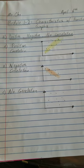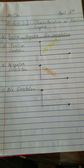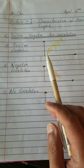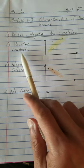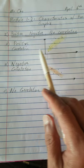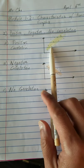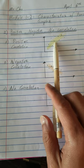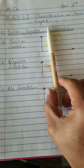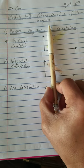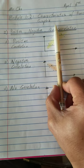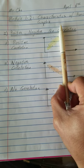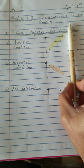We always read our graph from left to right. If you look at the first example here, A, positive correlation — from left to right, you notice that there's a trend on the graph moving up. So if you put down your pencil, you see how all the points or all the dots are moving upwards in general.